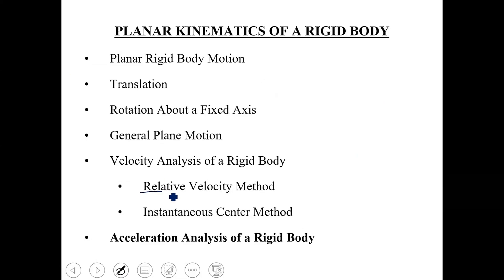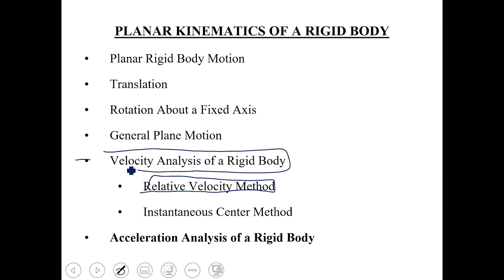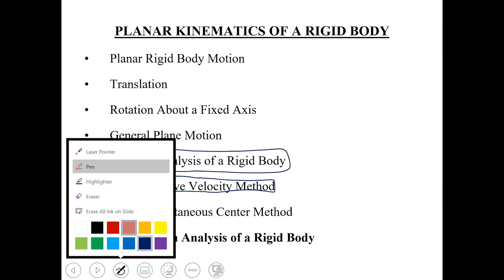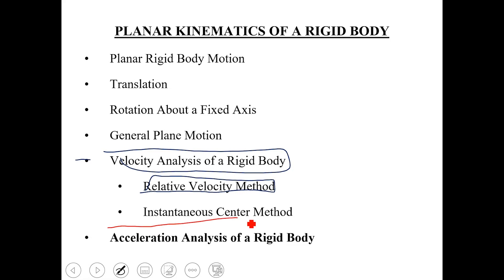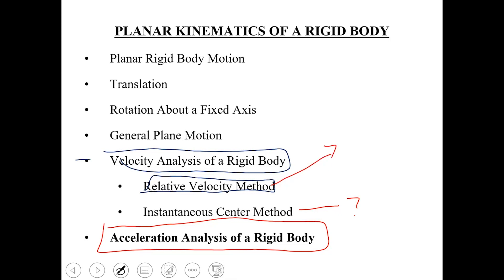Moving on to our next topic. We have talked about the relative velocity method for the velocity analysis of rigid body mechanisms. Immediately after this method, we are going to move to acceleration analysis of a rigid body. This is the instantaneous center method. This is basically a vector method — the relative velocity method. The instantaneous center method is a scalar method.